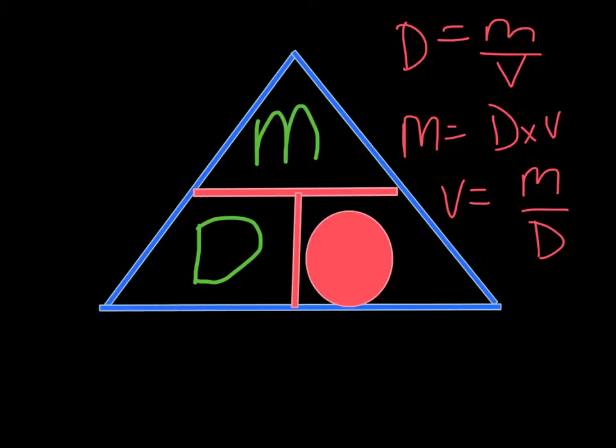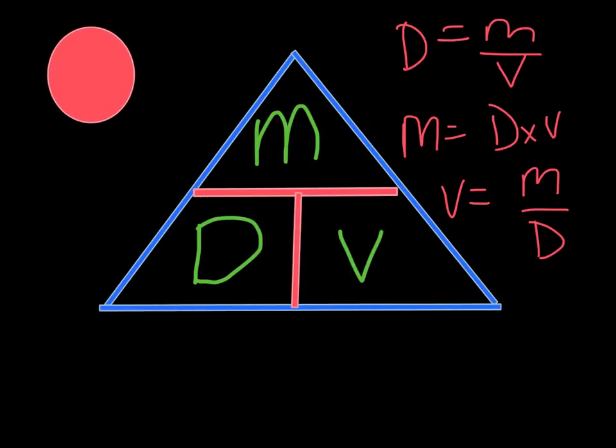When you're working with it, you start off by having your density equaling mass divided by volume. It's important that you set up the triangle correctly in order to get the terms to line up in the right form.